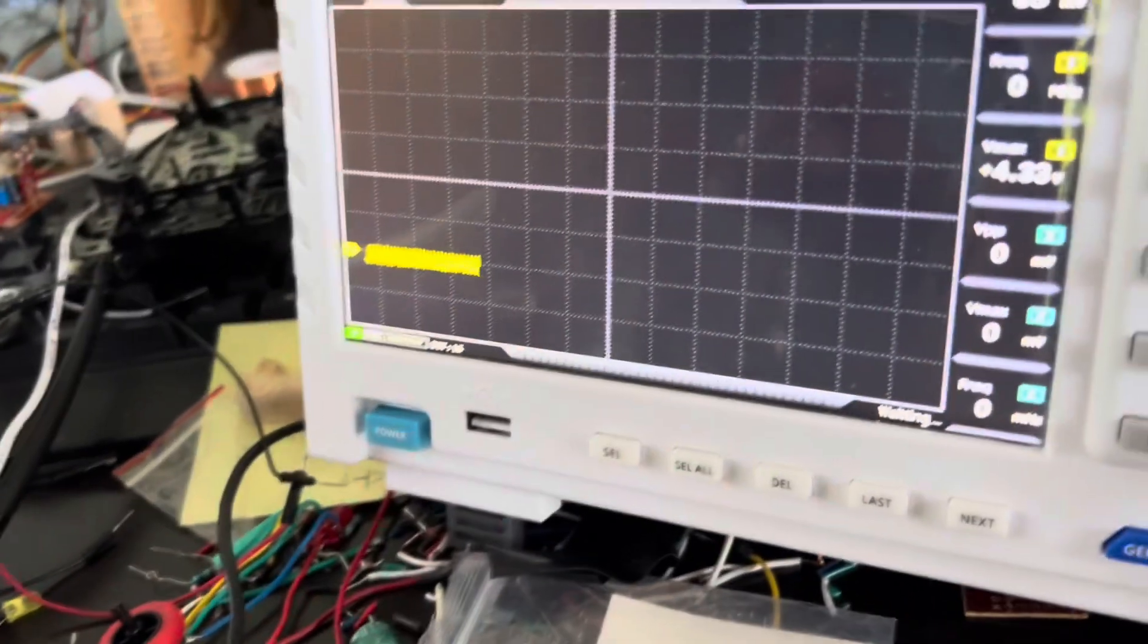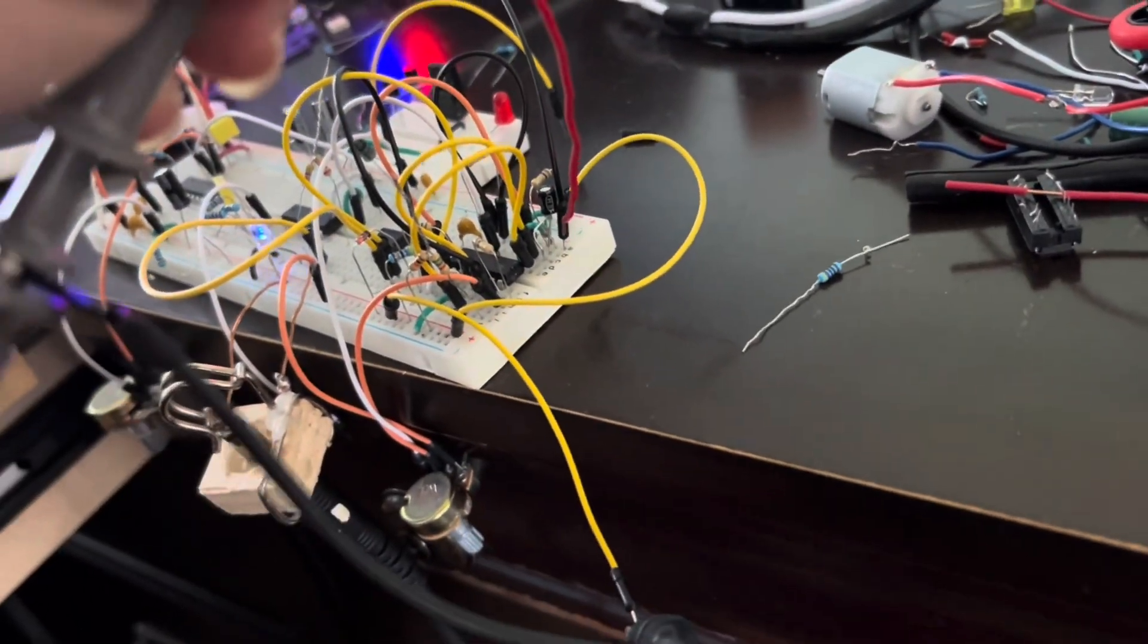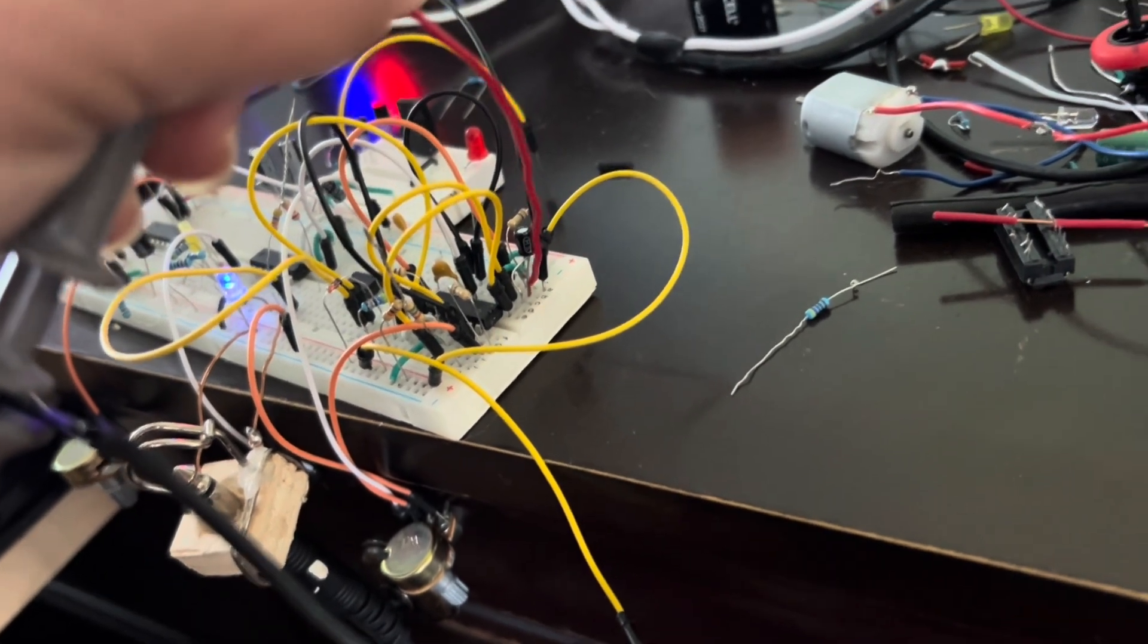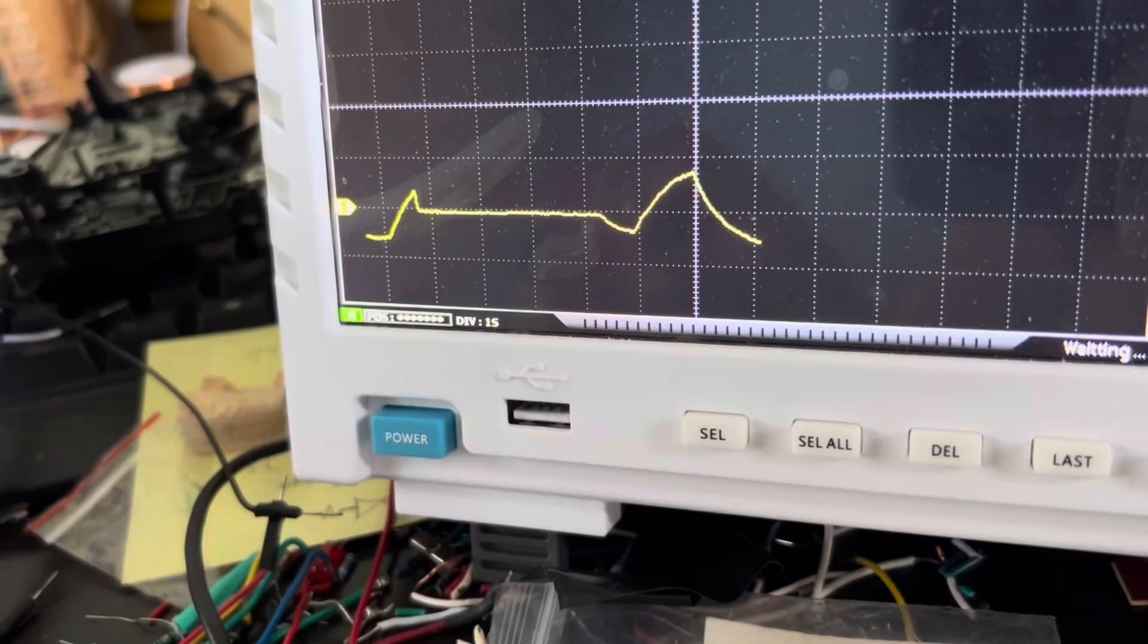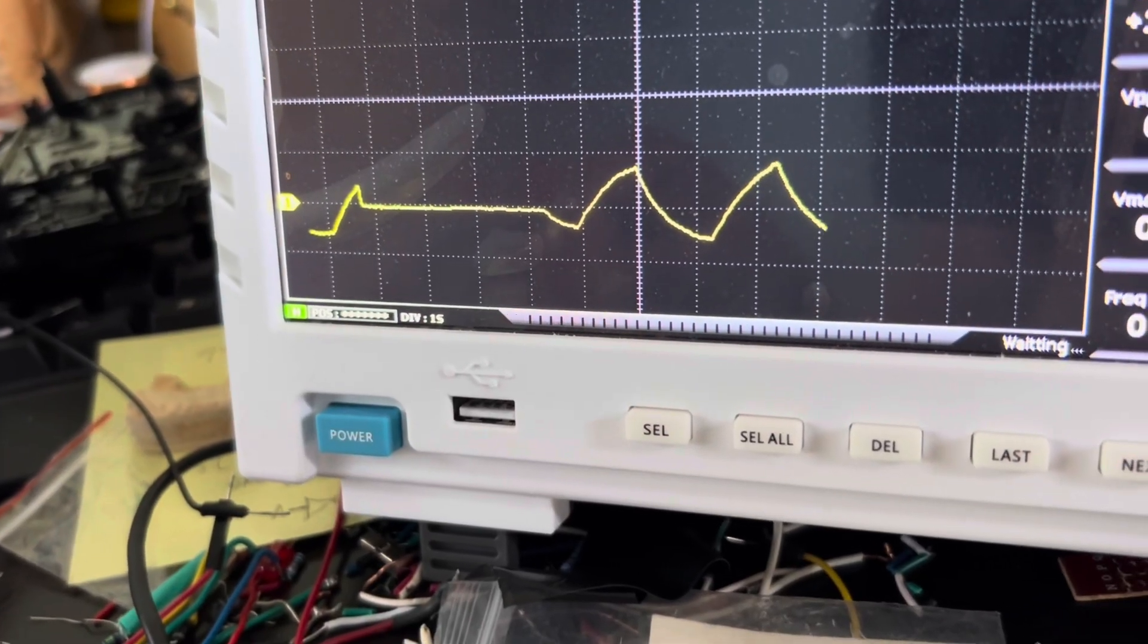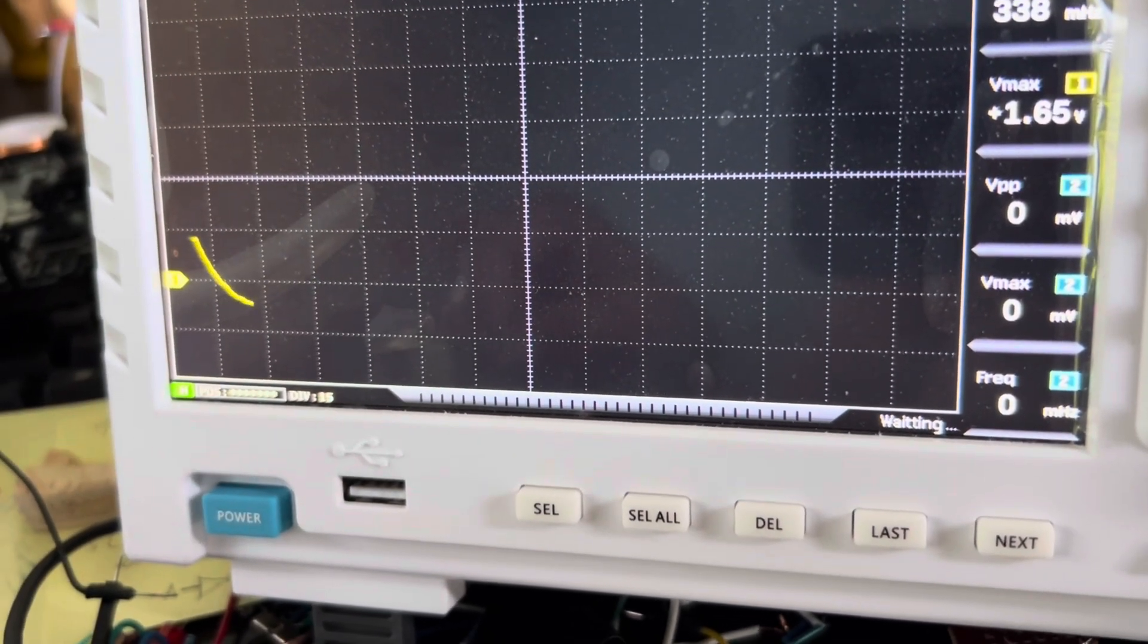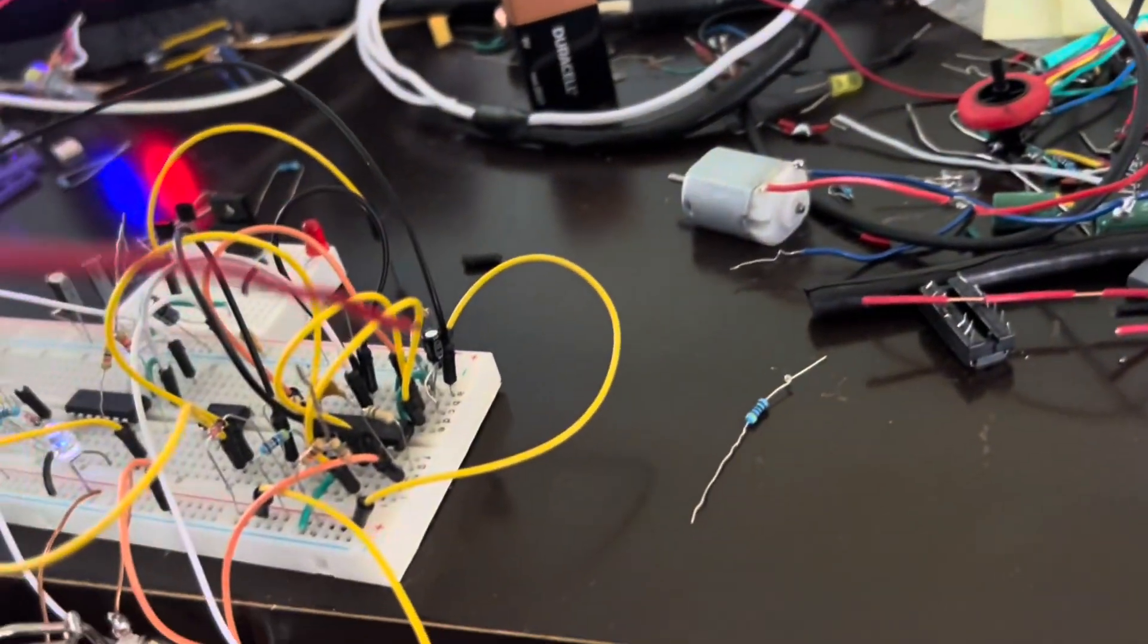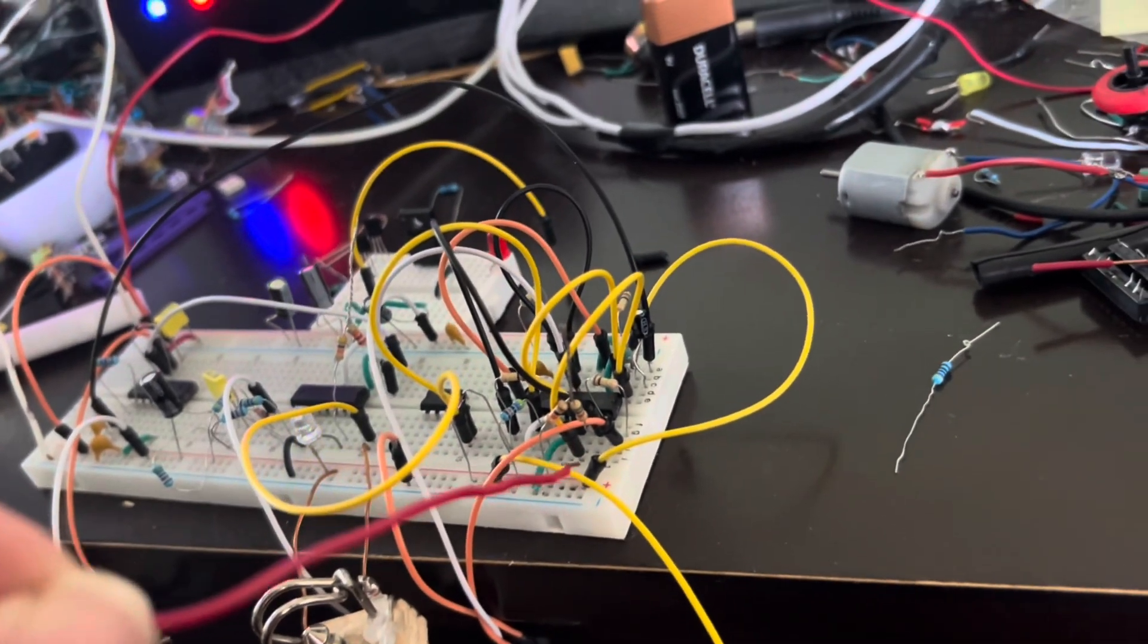That triangle wave oscillator is being brought over here, being brought to ground through a resistor and capacitor. And so you can see it here. There it is.